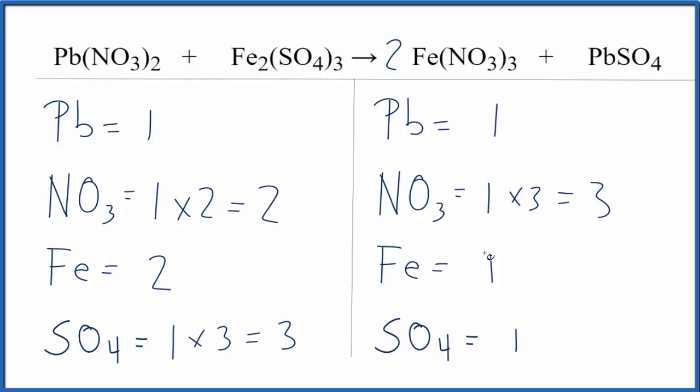So now I need to update the atoms here. I have 1 iron times 2. That gives me 2 iron atoms, and actually that solves our iron atoms.